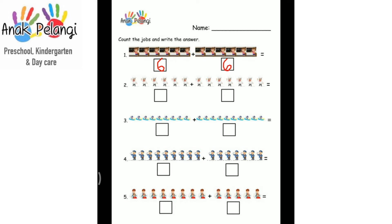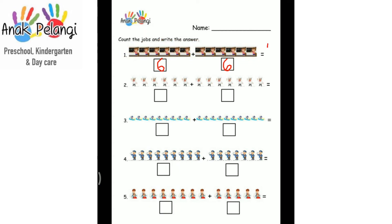6 plus 6 is equal to... Now, we count the total of the pictures. 1, 2, 3, 4, 5, 6, 7, 8, 9, 10, 11, 12. 6 plus 6 is equal to 12. Write 12.